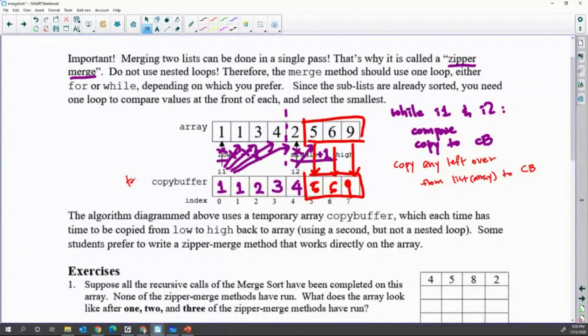Actually, copy buffer is temporary storage. If you are done sorting, you should copy back to the original. The last step is copy low to high, only the part that I sorted already from copy buffer. Because copy buffer has the sorted one, the original array still has unsorted data.